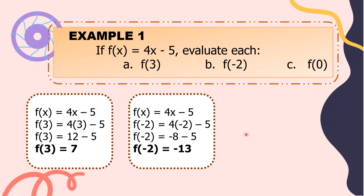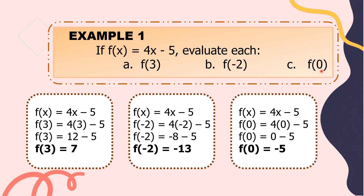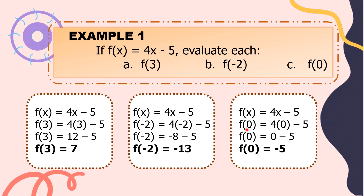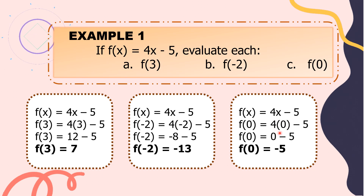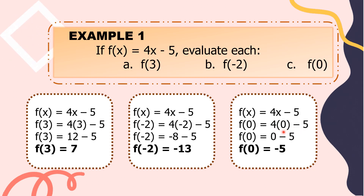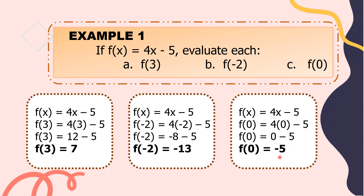For letter C, the value of x is 0. We change x into 0. f of x becomes f of 0 equals 4 times 0 minus 5. 4 times 0 is equal to 0. 0 minus 5 is equal to negative 5. So, f of 0 is equal to negative 5.